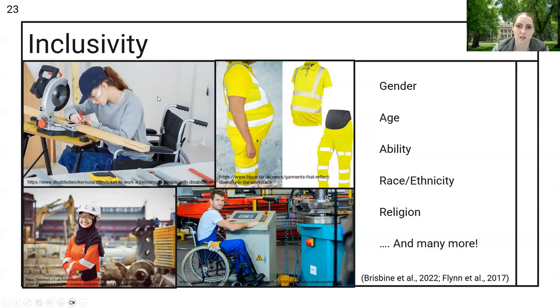We also need to think about inclusivity. Not only should we be providing garments PPE for all types of workers, but we need to think about gender, a diverse look at age as people might be retiring later, ability, race, ethnicity and religion. We need to consider how religious garments might interact with personal protective equipment. How are we accommodating for traditionally marginalized populations that haven't been involved in the workplace and how can we continue to be more inclusive.